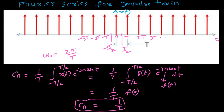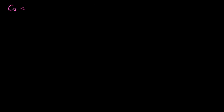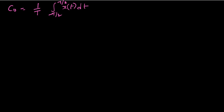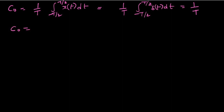Next, what is C0? C0 equals 1 over T, integrated from minus T/2 to plus T/2 of x(t) dt. This is 1 over T times the area of delta(t), which is 1 because the integral includes 0. So C0 equals 1/T.